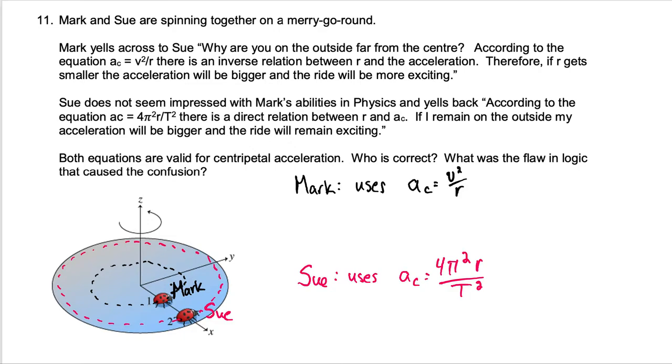Now Mark is wondering why Sue is on the outside of the merry-go-round because he thinks he knows a little physics and he says well according to our equation the acceleration which is the thrill of the ride, right, the more acceleration you have the more thrilling the ride is, the acceleration is v squared over r.